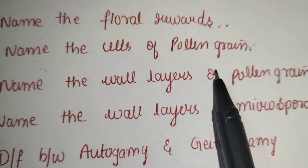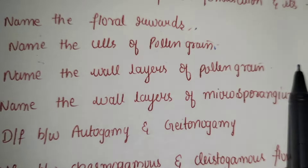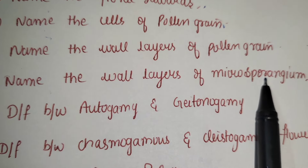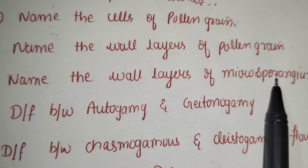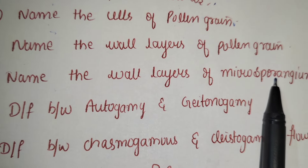Name the wall layers of pollen grains: intine and exine. Name the wall layers of microsporangium: epidermis, endothecium, middle layers and tapetum.